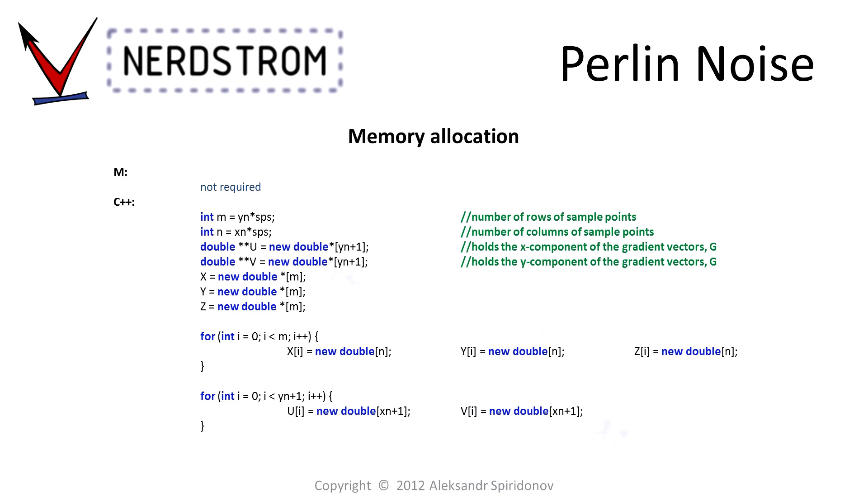On to memory allocation and variable declaration. In MATLAB, this isn't really necessary, although you should allocate the space required for the output array by initializing it with a call to the zeros function. In C++, we have to declare two integers, m and n, which store the size of the output array. We also declare pointers to the two-dimensional arrays which will hold the components of the gradient vectors. Then, we allocate the memory for all of this data.